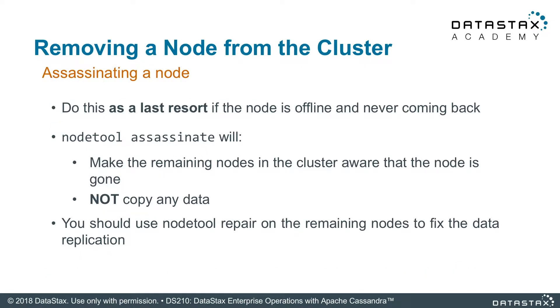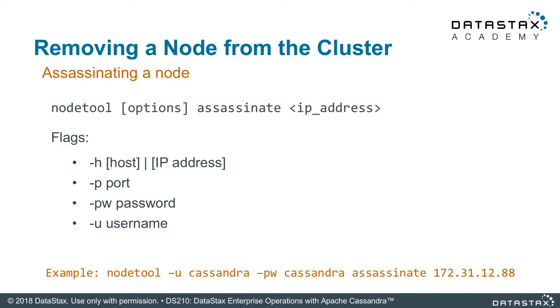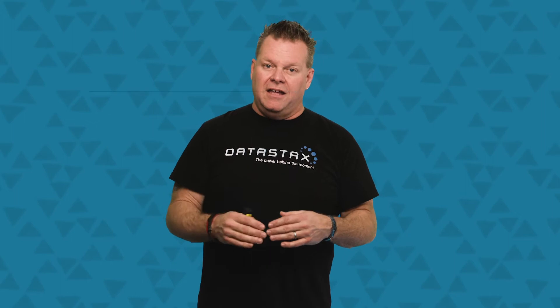Back to assassinate — again, last resort. Do not run this unless you absolutely have to. It's there for a reason: sometimes the state of the cluster gets a little wacky and you need this command to remove a node from all the system tables. But if you're using this, think twice before hitting that command, because you're forcing a node out of the cluster really hard. It may cause some weird instability if that data really was supposed to be there. The command is simple: node tool assassinate, put in the IP address of the node you want to get rid of, and it's gone. This has been a good overview of how to remove nodes in all different situations, from good to bad.